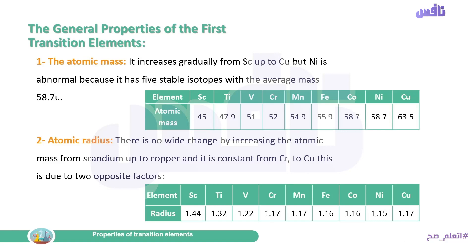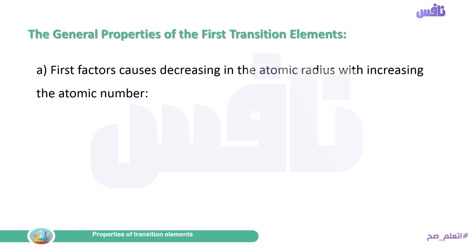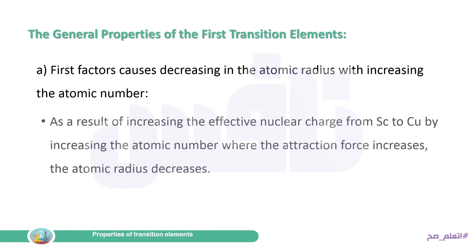What are the factors affecting the atomic radius? The atomic radius is the distance between the electrons in the outermost energy level and the nucleus. The first factor causes a decrease in atomic radius with increasing atomic number: the effective nuclear charge increases from scandium to copper. The effective nuclear charge is the positive charge in the nucleus which attracts the electrons in the outer energy level.